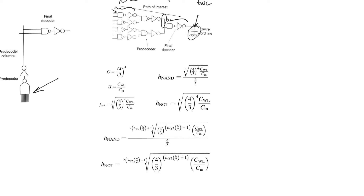This is a logical effort problem. Let's apply it to a 16-input NAND gate — a 2^16 row decoder. It will be composed of eight-input pre-decoder NAND gates and a final two-input NAND gate. The eight-input pre-decoder NAND gate is formed of three two-input NAND gates in series, together with three inverters. Overall, we have four two-input NAND gates and four inverters in the chain, driving the final word line capacitance.